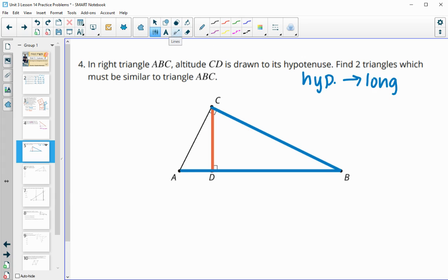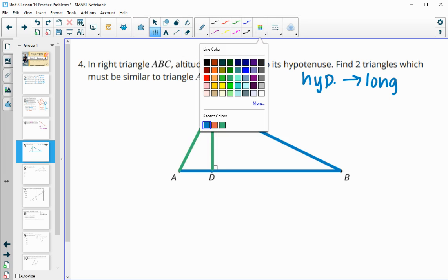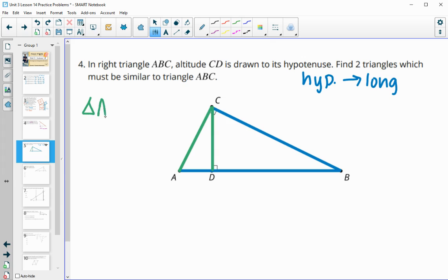We want to come up with two triangles that are similar to ABC. These two little triangles are going to be similar to the larger one. We just have to follow hypotenuse to long leg. So in this little triangle over here, if I go hypotenuse to long leg, the order of those letters is ACD. So triangle ACD is similar to ABC.